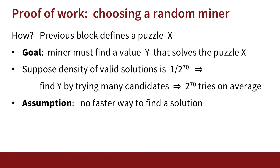So this is where proof of work comes in. I'm sure you've heard the term proof of work many times. The whole point of proof of work is to choose a miner at random, even if one entity tries to pretend to be a large number of miners. What happens is every block defines a certain puzzle — a cryptographic puzzle, which we'll denote by X. So block number N defines puzzle X.